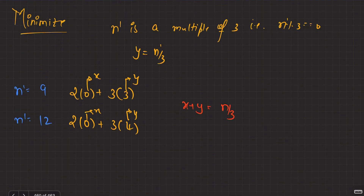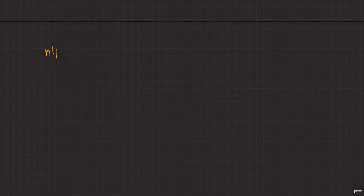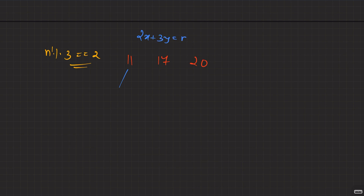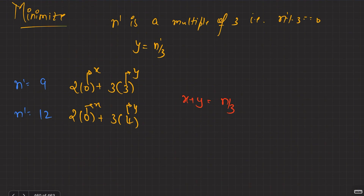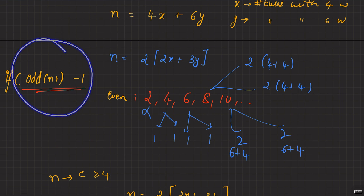When N_dash mod 3 = 2 (examples: 11, 17, 20), we write 9+2, 15+2, 18+2, which is 3*(N_dash/3) + 2*1. So y = N_dash/3 and x = 1, giving x + y = N_dash/3 + 1. Both remainder cases (1 and 2) give minimum = N_dash/3 + 1.